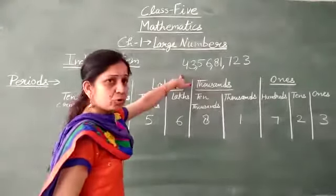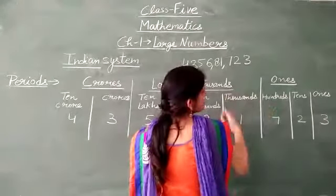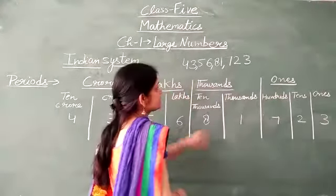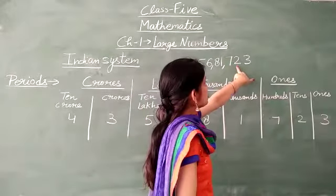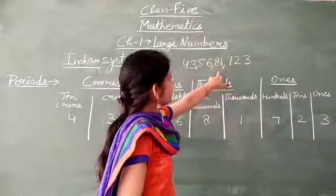This number is given to you, so how you will write this number in this chart. Last 3 digits in ones period means last 3 digits are 7, 2, 3 - 7, 2 and 3. Then comma here.